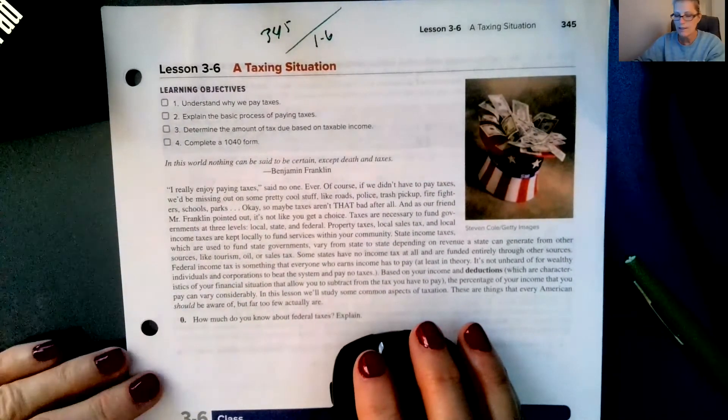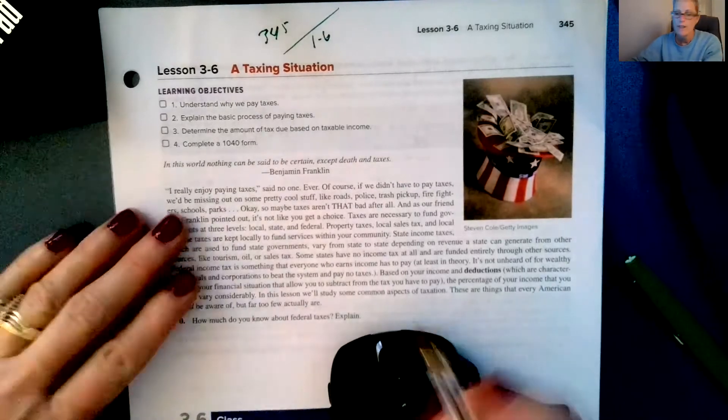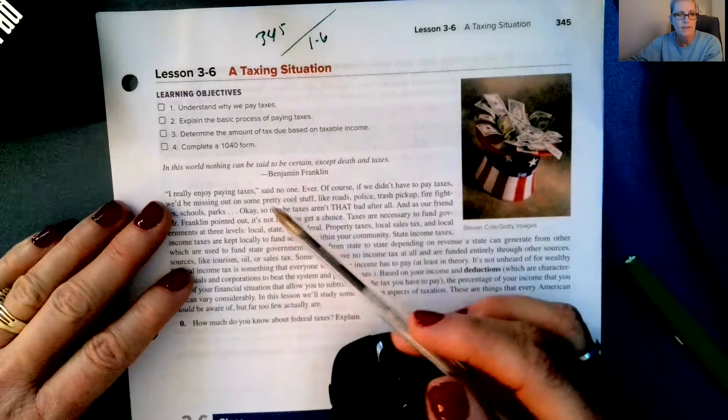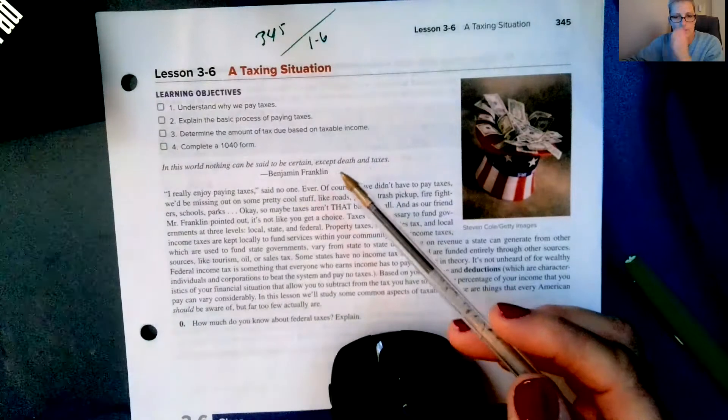Hello, today we're going to do the last lesson in unit three. It's called a taxing situation. The quote says in this world nothing can be said to be certain except for death and taxes, and that quote's from Benjamin Franklin.